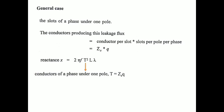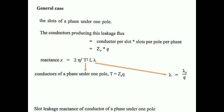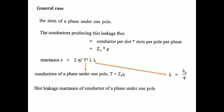Here T is the total conductors per phase under one pole, declared as Zs × q — slot conductors times slots per pole per phase. Lambda is the permeance, declared as λs / q. Substituting these two equations into the reactance formula, the q values cancel and the equation becomes: X = 2πf·Zs²·q·L·λs.